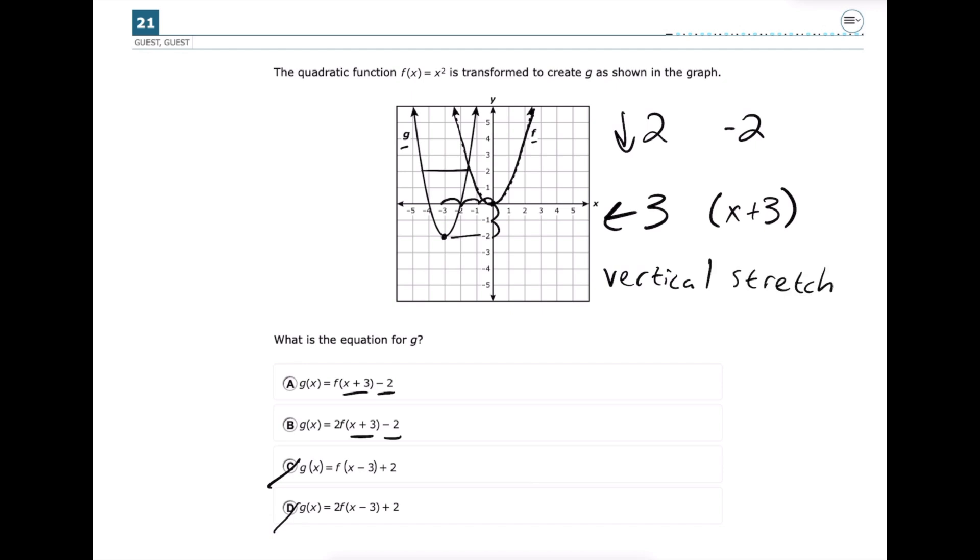So basically, outside of our parentheses, we're looking for some number that's greater than 1 that will cause that to stretch like that. And letter a does not have any number outside of it, so we know that that is not correct because it definitely does get more narrow.